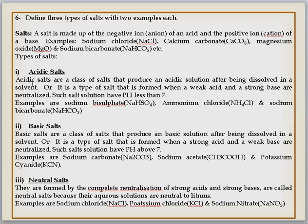First, let's talk about acidic salts. This is a class of salts that produce an acidic solution after being dissolved in solvent. When we dissolve it in any solvent and have a resulting solution, if we check it with pH paper or pH meter, it will show acidic in nature. In pH paper it will turn red from blue, and in pH meter the pH value will be less than 7. It is a type of salt that forms when a weak acid and a strong base are neutralized. The weak acid is not completely neutralized, the strong base is completely neutralized, and the salt pH is less than 7. Examples are sodium bisulphate NaHSO4, ammonium chloride NH4Cl, and sodium bicarbonate NaHCO3.